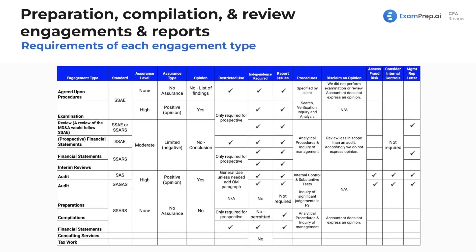Now we have a large chart covering virtually every engagement type on the exam. Focusing on preparation, compilation, and review: the standards followed are generally SSARS, with possible SSAE for reviews of MD&A. Memorize the assurance levels — review provides a moderate level, which is limited assurance. There is also the concept of negative assurance for reviews. Preparations and compilations provide no assurance.